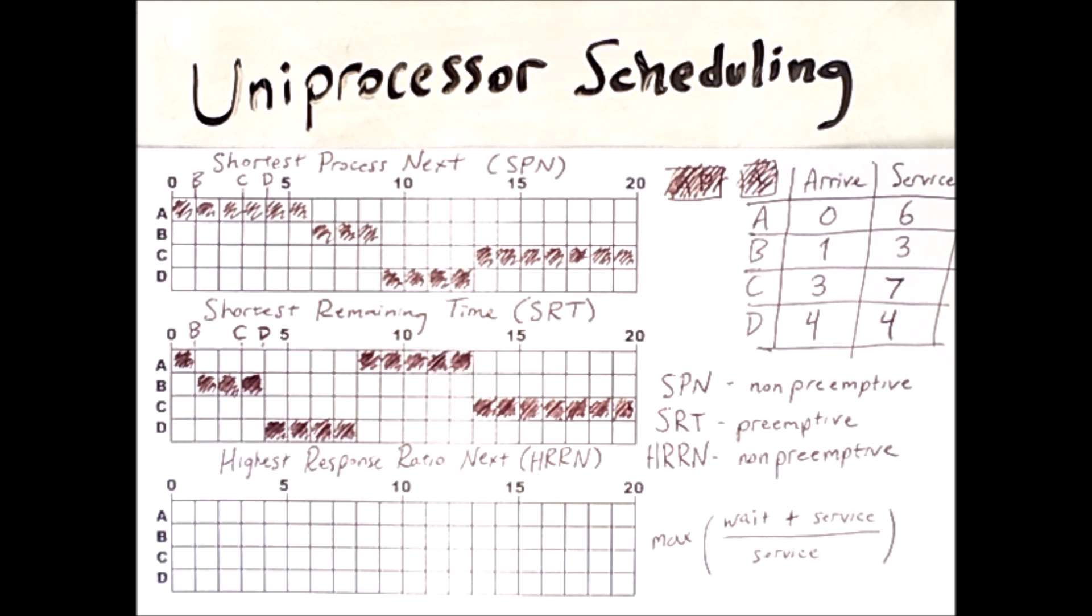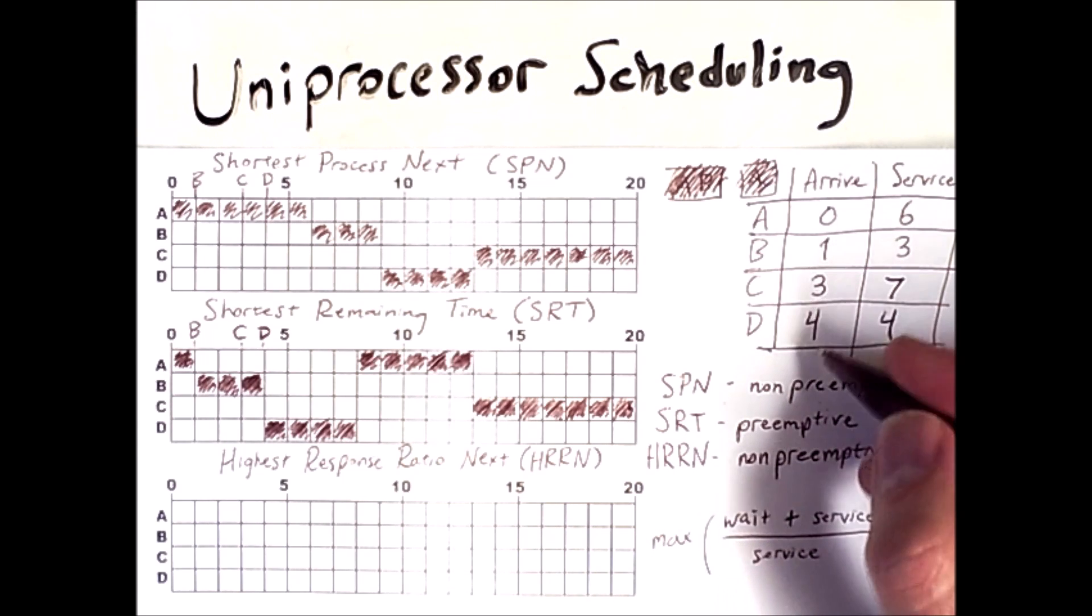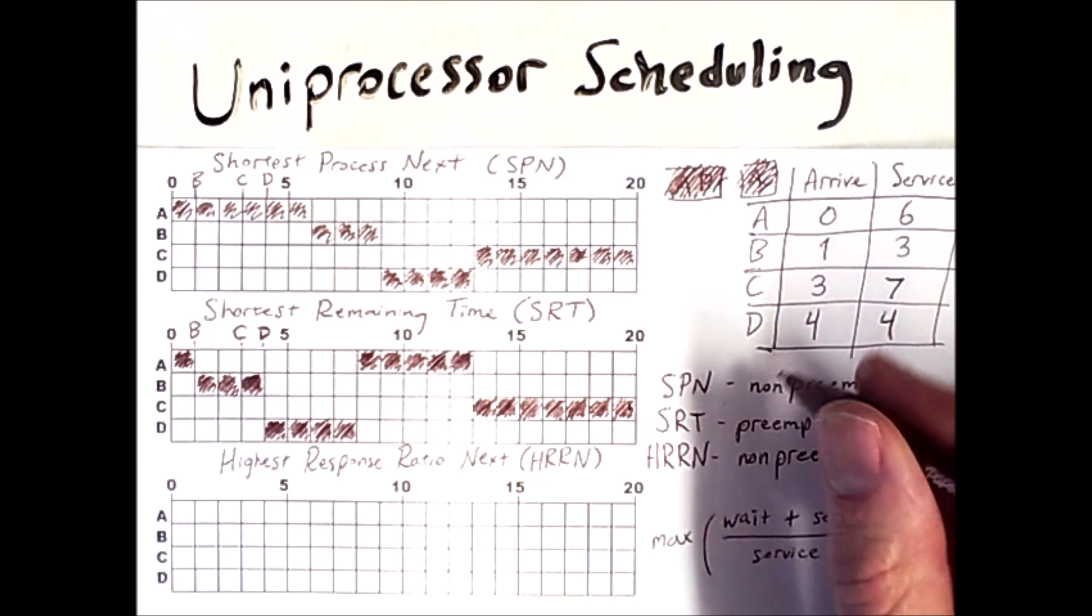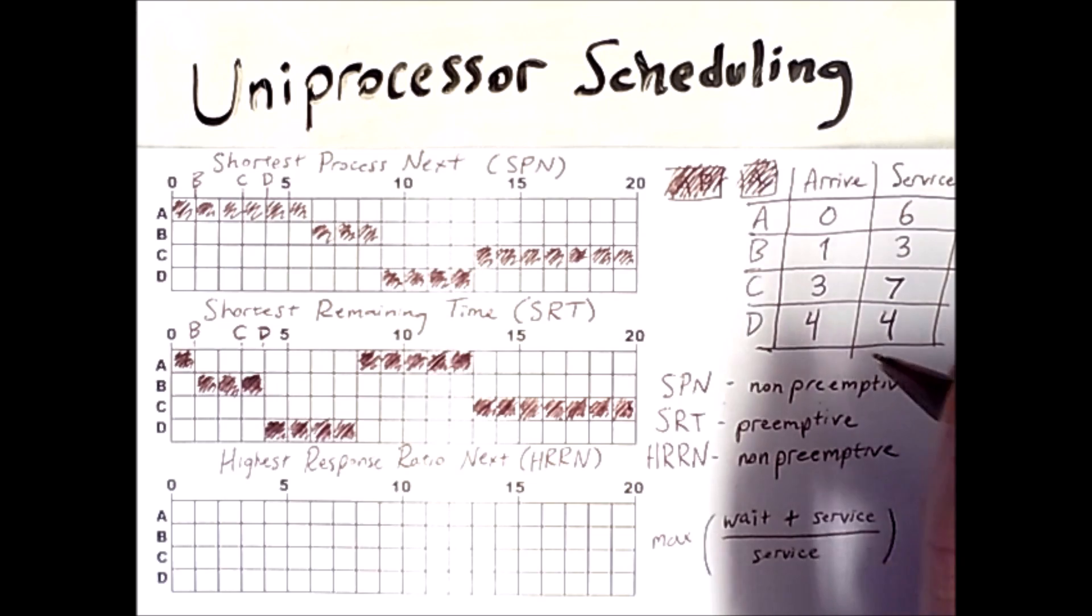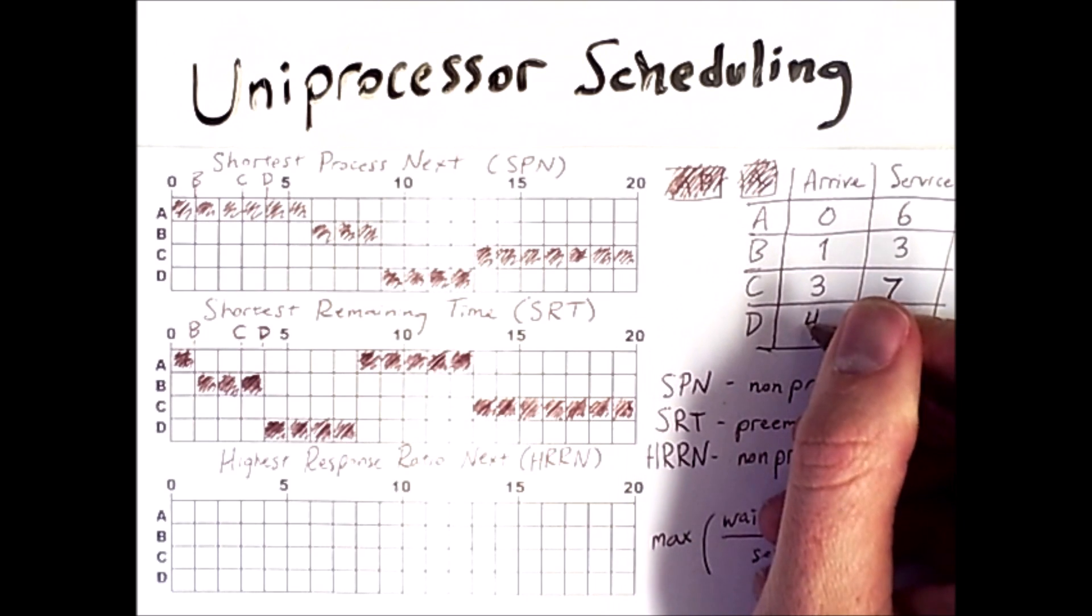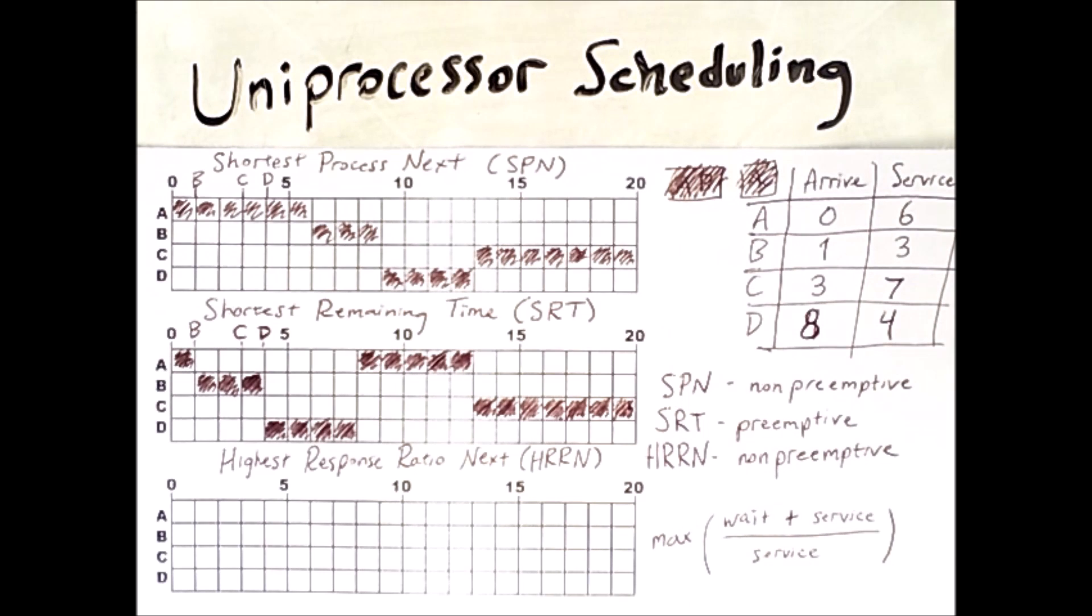In order to illustrate something interesting about the behavior of this algorithm, I'm going to change the arrival time of process D in this table here. Instead of arriving at time 4, I'm going to make it arrive at time 8. The rest will be the same and here's the result.